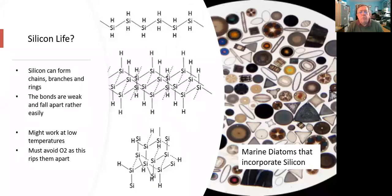The first and most popular choice is silicon. Silicon can do the same thing. It can form long chains, sheets, rings, and branching structures. But silicon to silicon bonds are not very strong, and they would fall apart at the sort of temperatures that we exist at. Too much energy in the environment would shake them apart. Also, they'd have to avoid oxygen because oxygen tears these silanes, these chains of silicon atoms, apart.